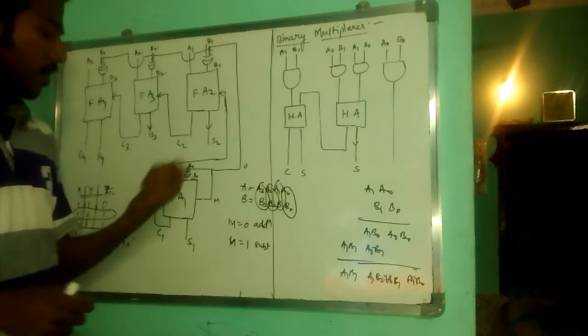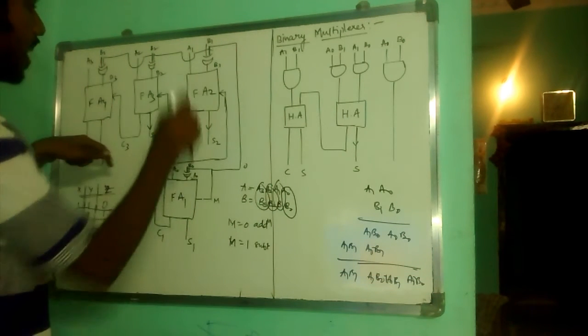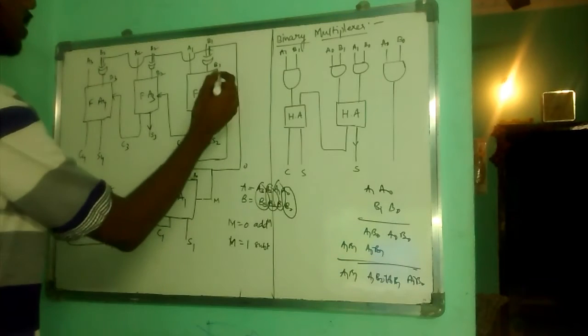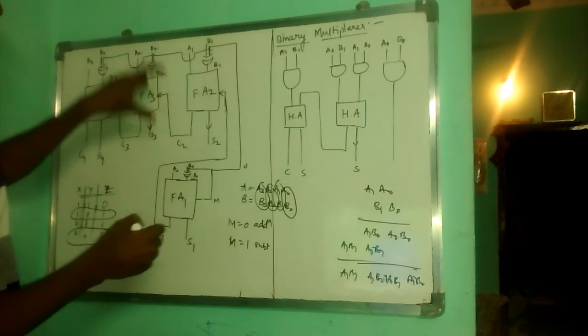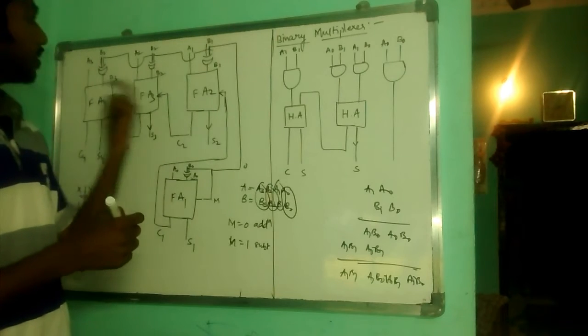Now, we know that full adder has 3 inputs. This carry acts as other input. So we have 3 inputs. Now, consider addition, this follows addition.